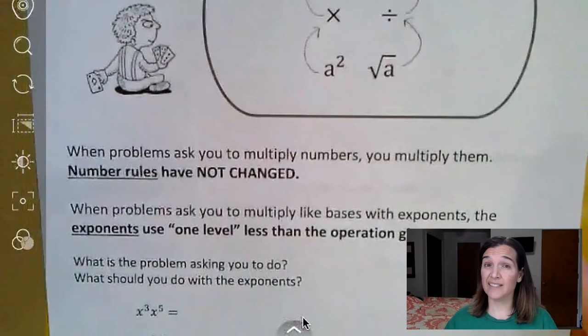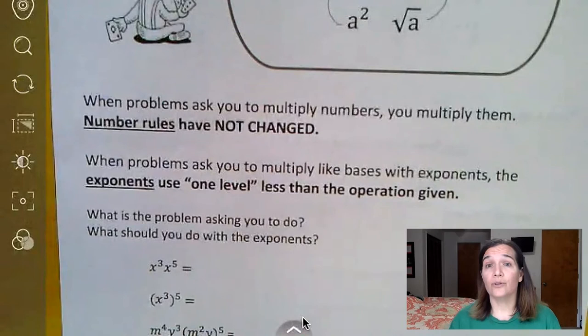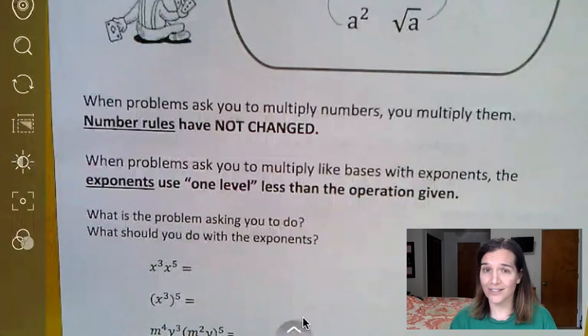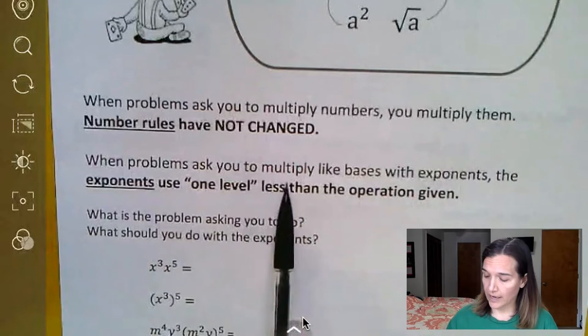But other things to keep in mind here. When problems ask you to multiply numbers, you multiply them. Number rules have not changed. The number rules you've always known are still the same. So when it comes to numbers, do what you've always done.